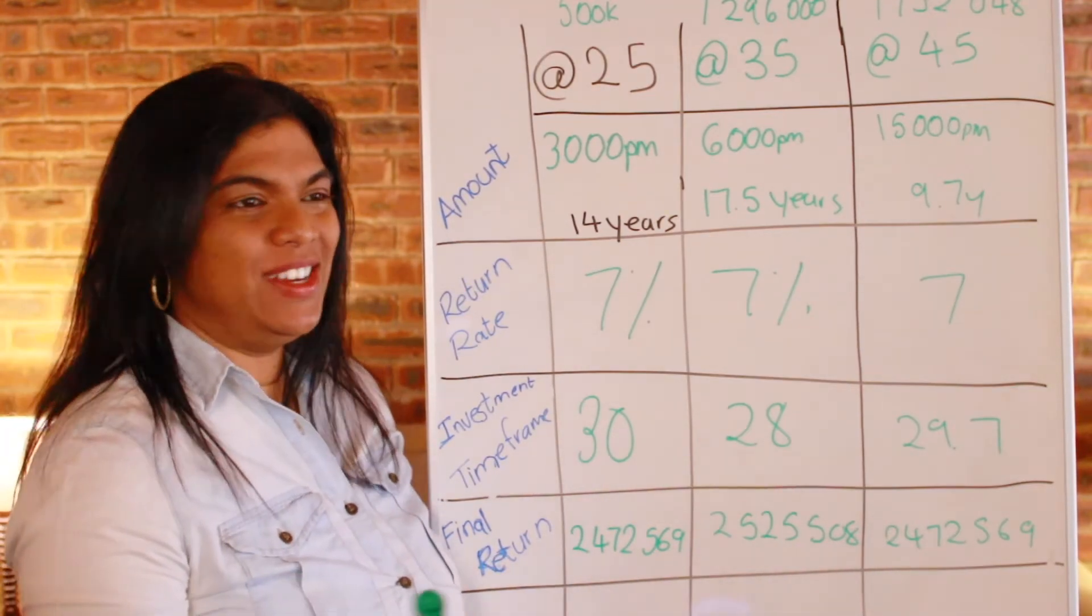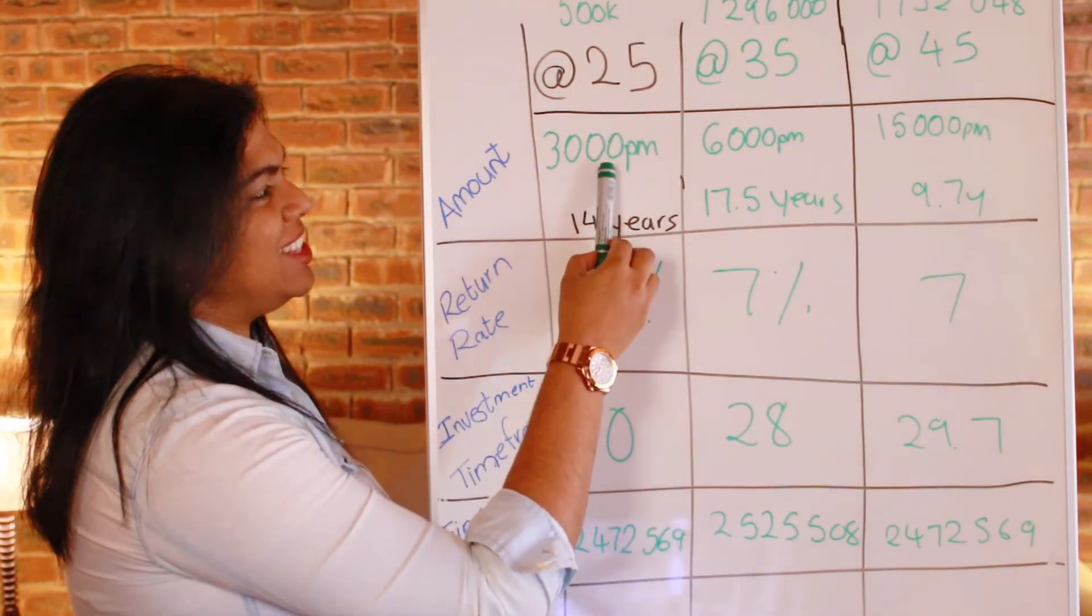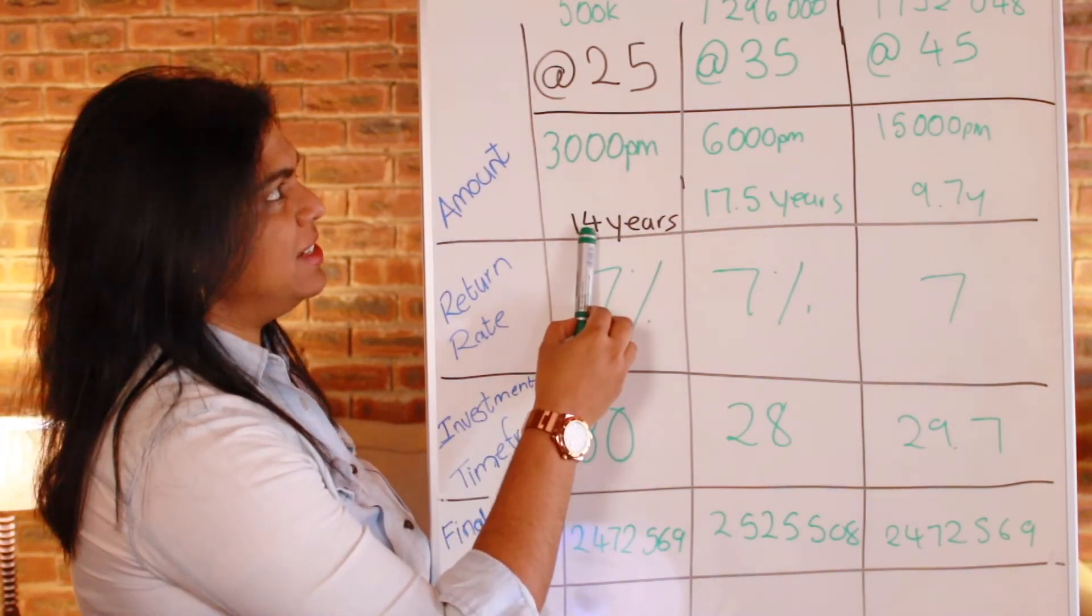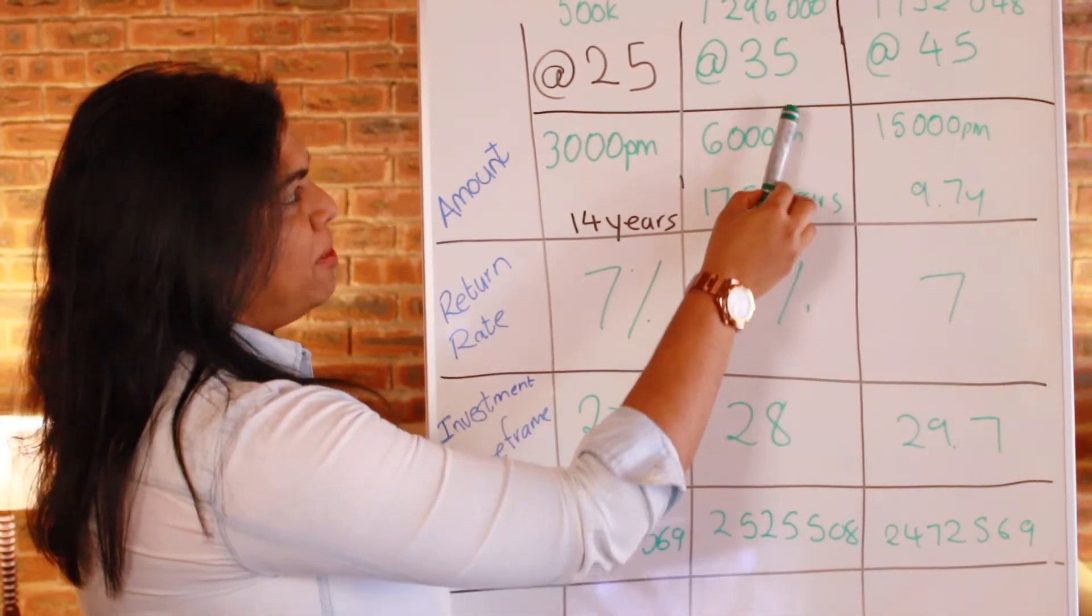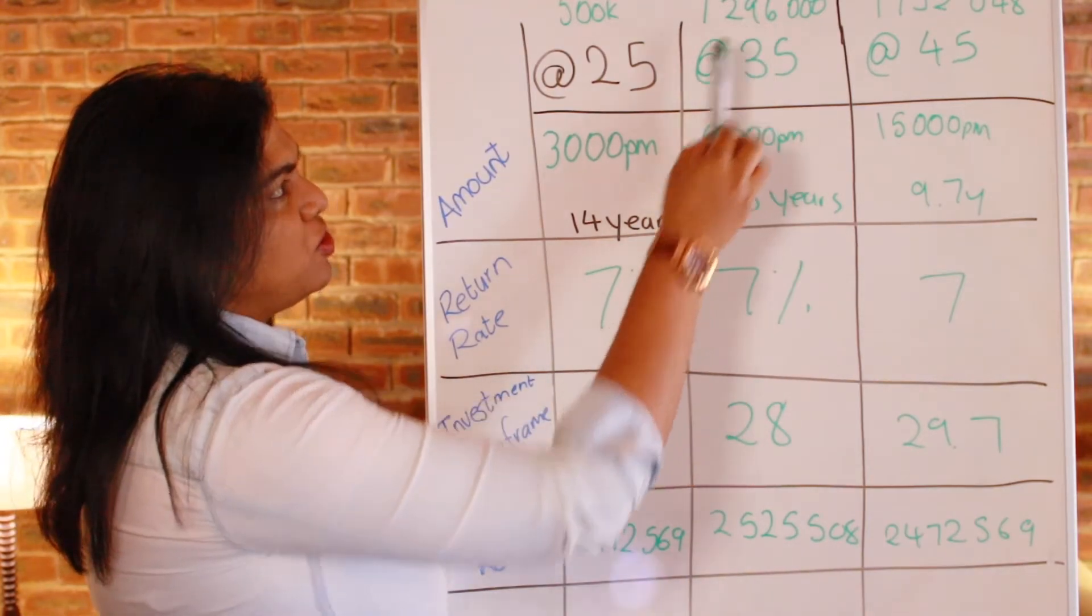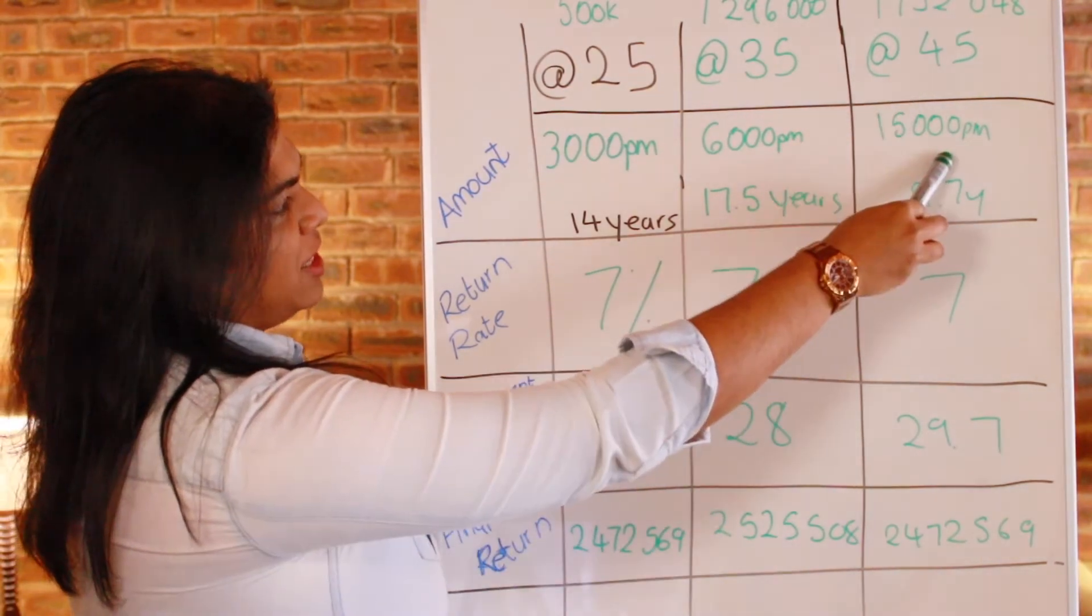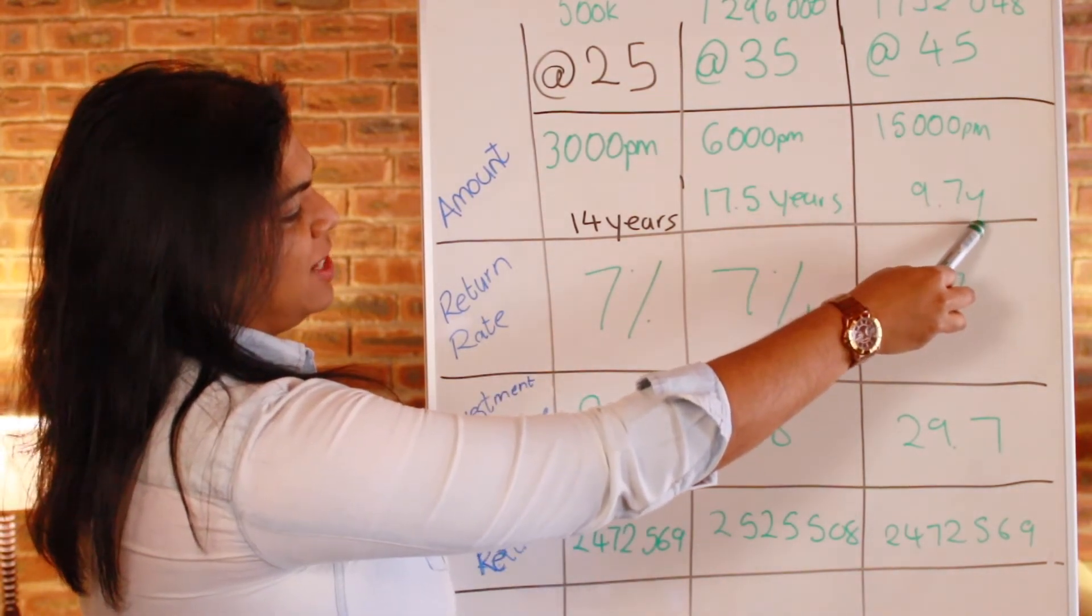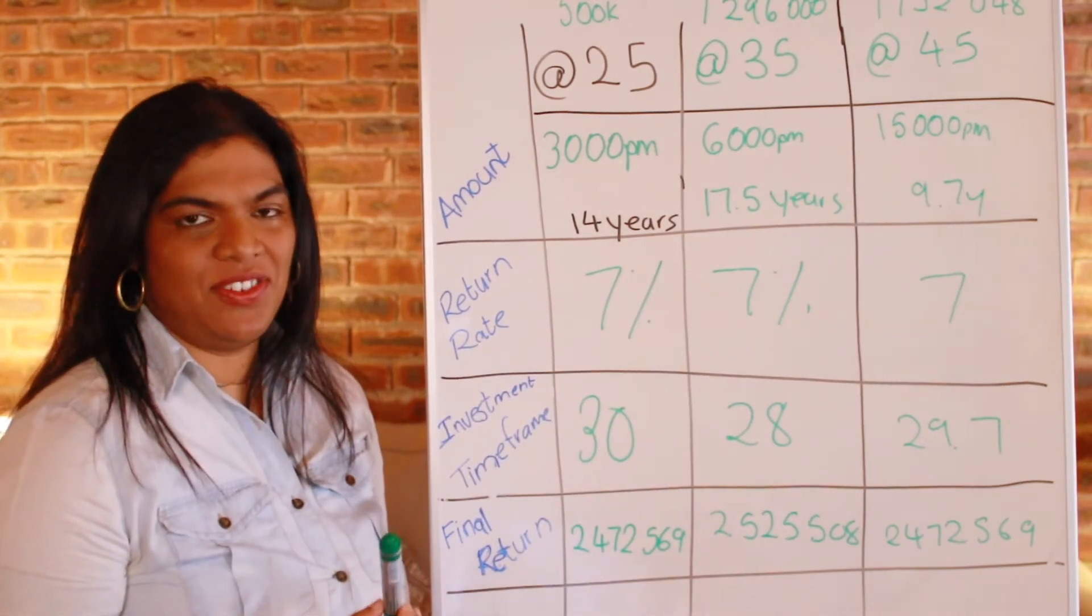So it's your choice, really. Invest early at around 25. You'll only have to invest 3,000 rand a month for a period of 14 years. Your total contribution being 500,000 rands. Invest 6,000 rands per month at age 35 for a period of 17 and a half years. And the total contribution there would be almost 1.3 million. Or invest at 45, 15,000 rand a month for 9.7 years. And the total contribution there would be 1,750,000 or so.